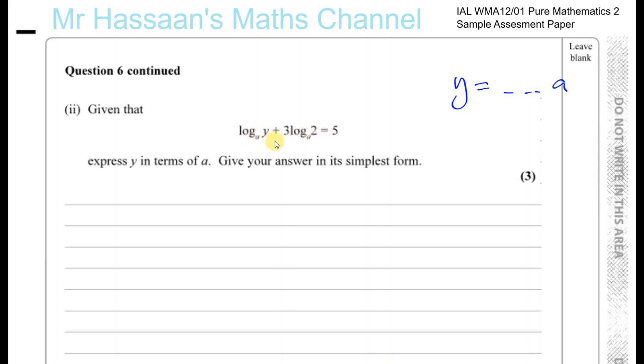Now I cannot combine these together right now because it says 3 log A 2. So I'm going to use the power law, which is basically if I have A times log to the base B of C, I can write that as log to the base B of C to the power of A. What multiplies A can become the power. That's one of the laws of logarithms.